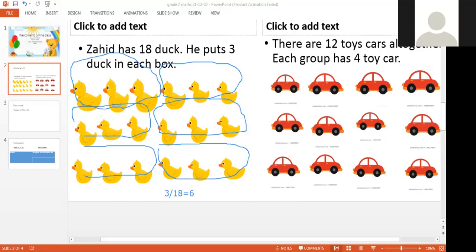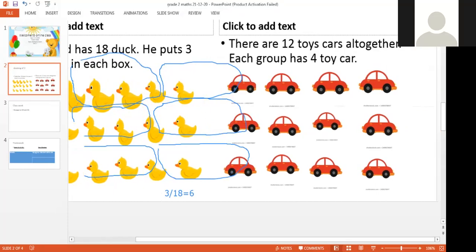Again we are going to do with the car. There are 12 toy cars altogether. Each group has four toy cars. One, two, three, four, five, six, seven, eight, nine, ten, eleven, twelve.